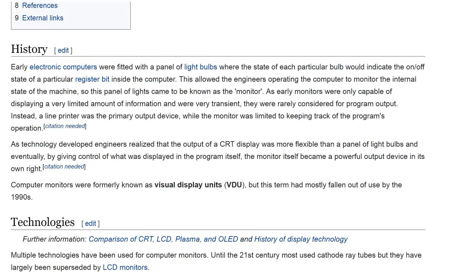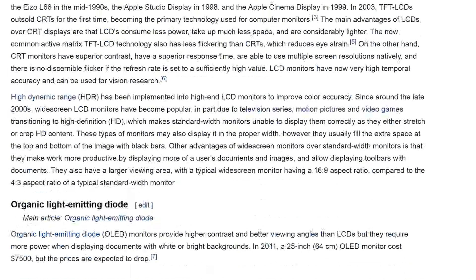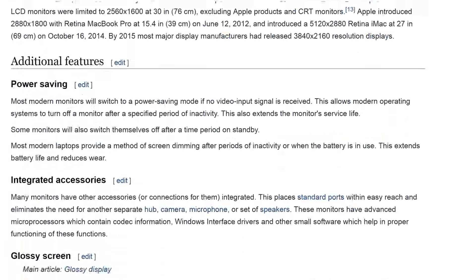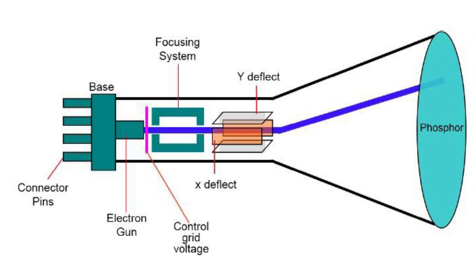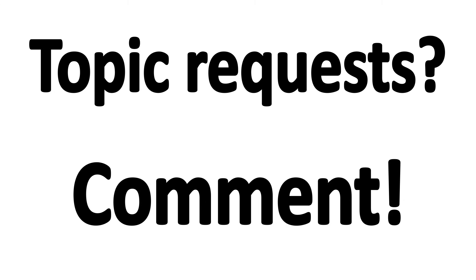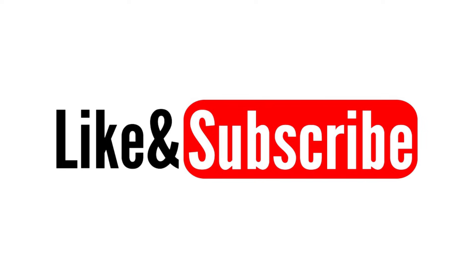That concludes the basics of how computers determine what colors to display on screen. I encourage you to dive into the massive amount of information available on this topic, especially regarding cathode ray tube monitors, which are brilliant pieces of technology. I plan to make many more explainer videos like this in the future, so leave topic requests in the comments. Feedback is always helpful, as is liking, subscribing, and sharing.